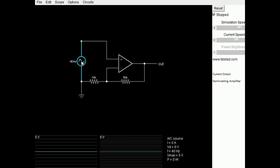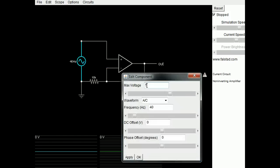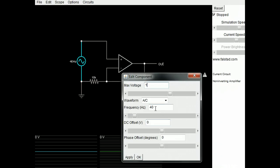Our voltage source here, we can edit that. Instead of a 5 volt signal, let's just make that a 1 volt signal for simplicity. 40 hertz is fine.